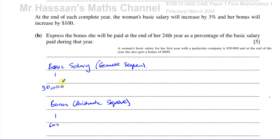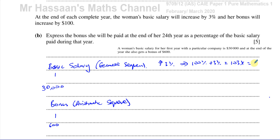An increase of 3% means we multiply by 100% + 3% = 103%, which is 1.03 as a decimal. So we multiply $30,000 by 1.03 each year. For the geometric series, the nth term is A × R^(n−1), so for the 24th year with n = 24, A = 30,000, and R = 1.03, we compute 30,000 × 1.03^23.